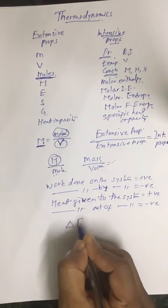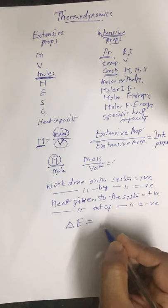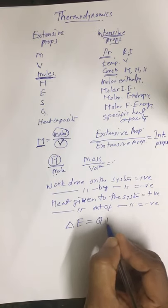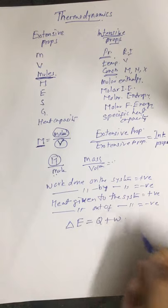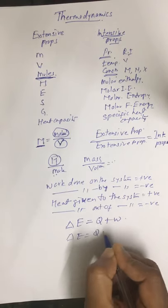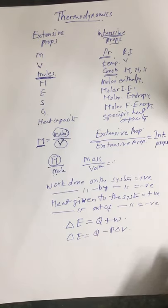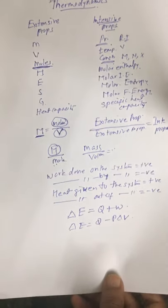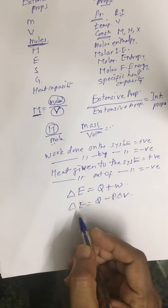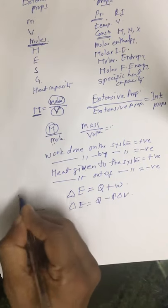The mathematical statement of the first law of thermodynamics is: ΔE = q + w. Alternatively, ΔE = q − PΔV, because w = −PΔV. This is something you must remember.